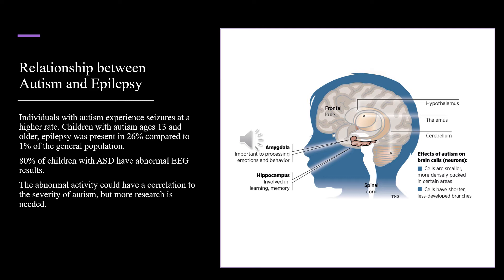Individuals with autism experience seizures at a higher rate. In cases of children with autism ages 13 and older, epilepsy was present in 26% of cases compared to 1% of the general population. 80% of children with Autism Spectrum Disorder have abnormal EEG results. The abnormal activity could have a correlation to the severity of autism, but more research is needed.